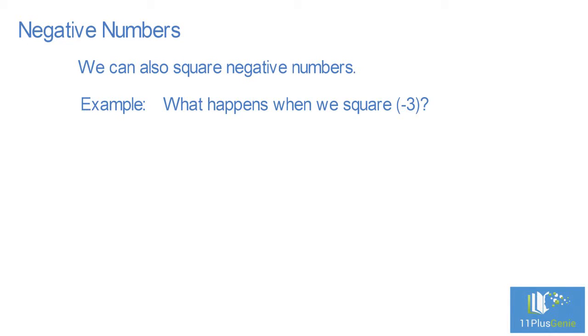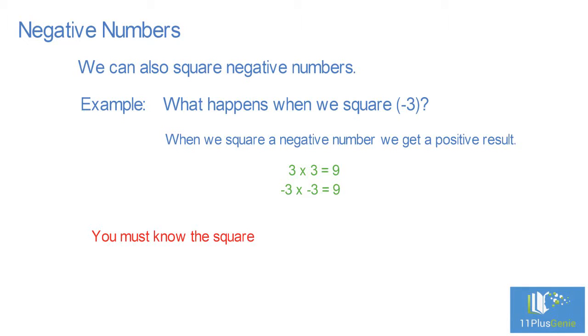Negative Numbers, we can also square negative numbers. For example, what happens when we square minus 3? When we square a negative number we get a positive result. Just the same as squaring a positive number, 3 times 3 equals 9. Minus 3 times minus 3 equals 9. You must know the square numbers up to 225, which is 15 times 15.